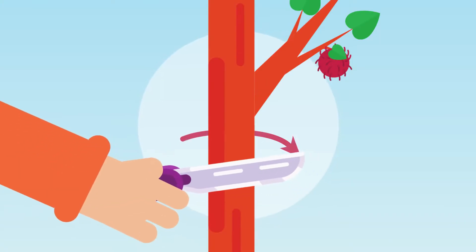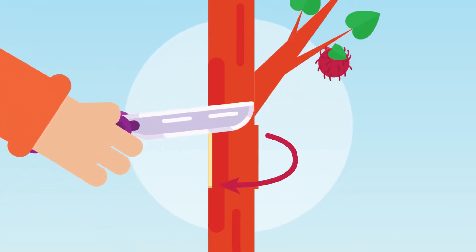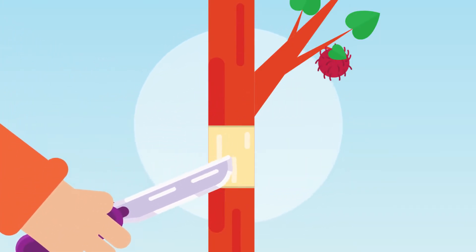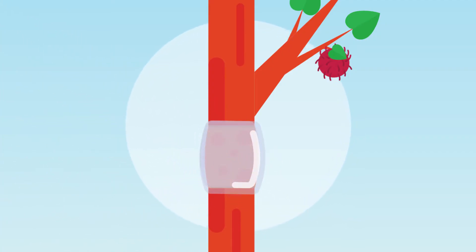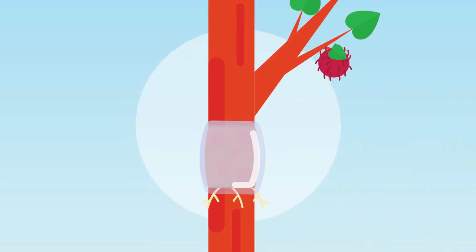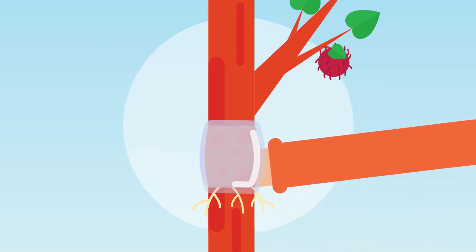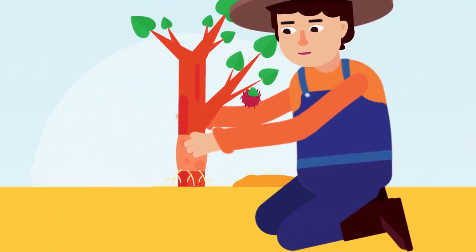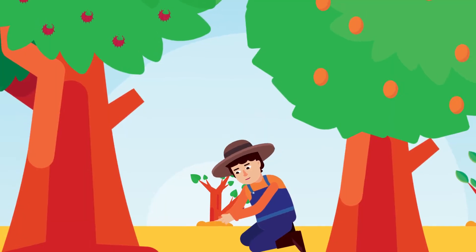Layering can be done on plants such as lime and bougainvillea. Markotting: Markotting is a method in which a ring of bark is also removed from the branch. However, in this method, a layer of moist soil is folded around the ringed segment and watered every day to maintain the moisture of the soil. When roots show up, the branch is trimmed and planted. Rambutan and Chiku trees readily respond to this method of propagation.